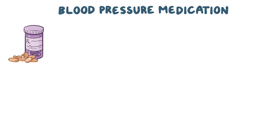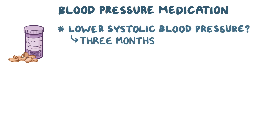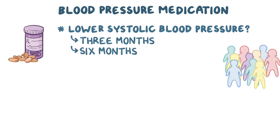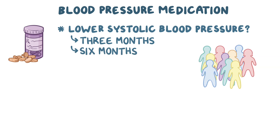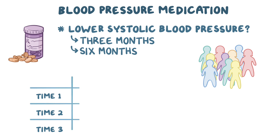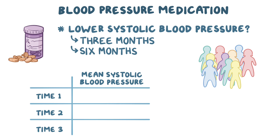Let's say there's a blood pressure medication called medication A, and you want to figure out if it helps lower systolic blood pressure after taking it for three months and after taking it for six months. You find 10 people and give each of them medication A. Then you measure each of their systolic blood pressures at time one (when you initially gave them the medication), time two (three months later), and time three (six months later). The mean systolic blood pressure at time one is 138, at time two it's 132, and at time three it's 130.